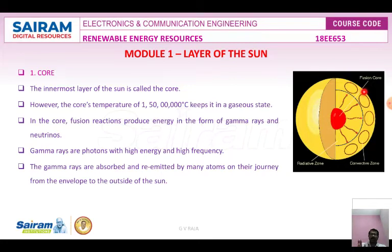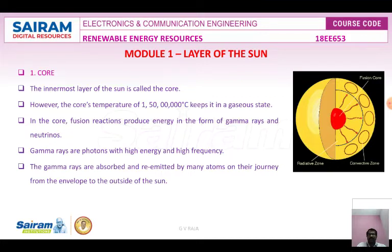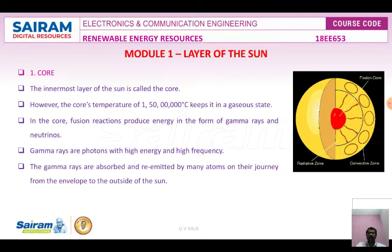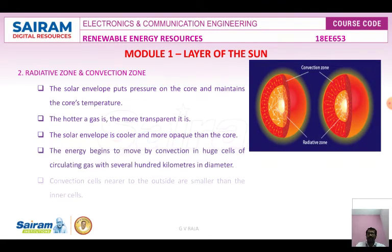Gamma rays are absorbed and re-emitted by many atoms on their journey outward. When they leave the atom, their energy is reduced, so each high-energy gamma ray that leaves the solar envelope becomes about 1,000 low-energy photons. Neutrinos are extremely non-reactive elements. They react with large pools of molecules in mines, and by measuring the amount of argon produced, the number of neutrinos can be calculated.